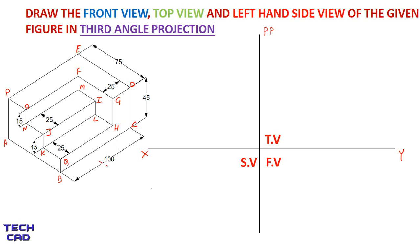I put an arrow from this side, so this could be the front view — when the observer sees from this side it is the front view. From this side it is the left hand side view, since the observer has to come to their own left side to see the side view. Now let's start the solution.